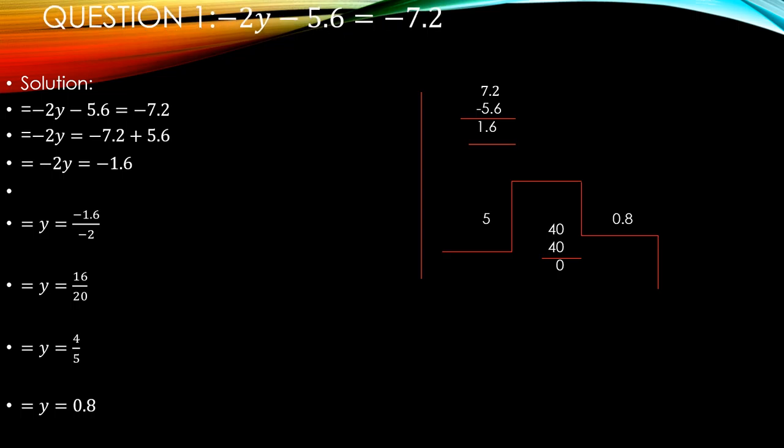Let's start question number 1 which is the linear equation in one variable: minus 2y minus 5.6 equals minus 7.2. You can see there are two sides, right hand side and left hand side. First, you write the question again in the solution. Now, the like terms will be added and subtracted in algebra. But in the equation, if you move from right to left or left to right, the sign will change. Minus changes into plus, plus changes into minus, multiply changes into division and division changes into multiplication.